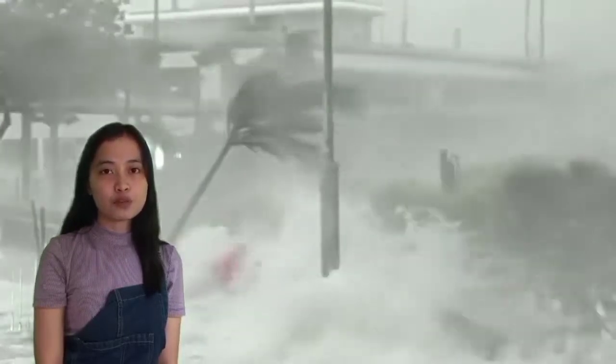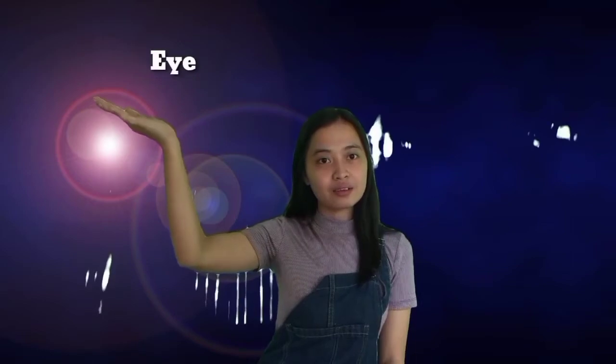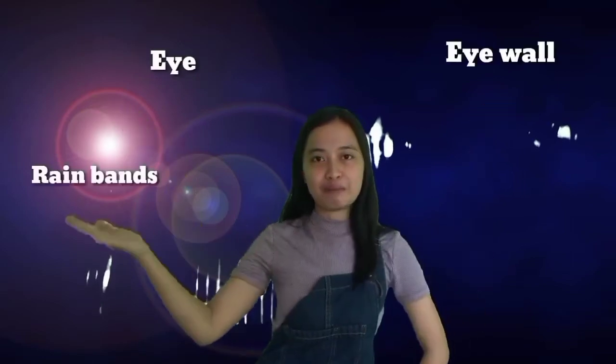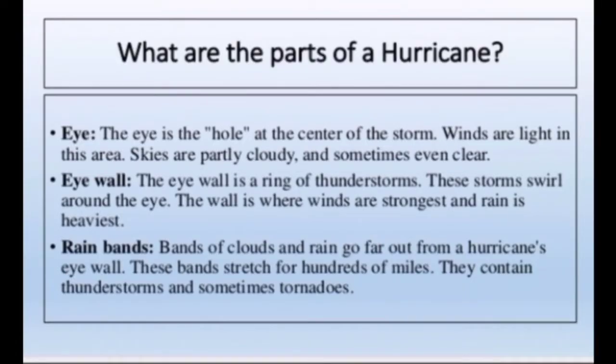What is a hurricane? A hurricane is a type of storm called a tropical cyclone, which forms over tropical or subtropical water. The parts of a hurricane include the eye, eyewall, and rainbands.